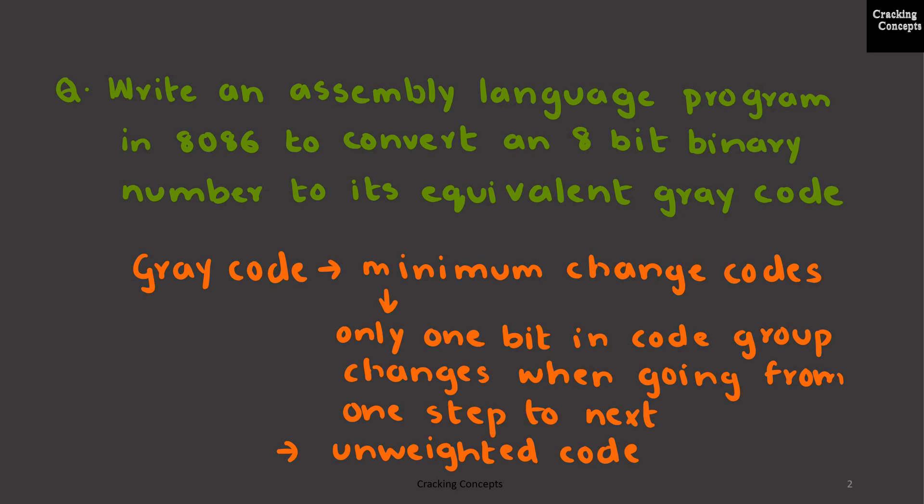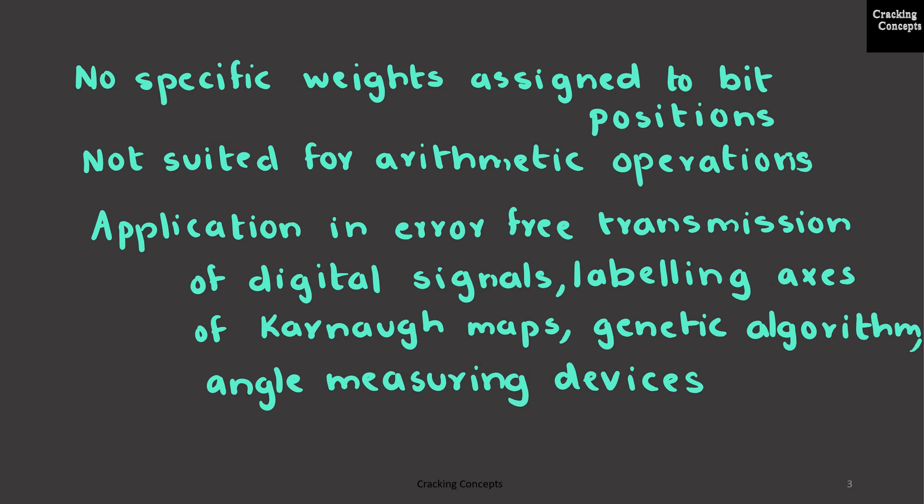Now, Gray code belongs to a category called minimum change codes. This is because only one bit in the code changes when going from one step to the next. It is also an unweighted code, which means no specific weights are assigned to the bit positions. This makes it unsuitable for arithmetic operations.